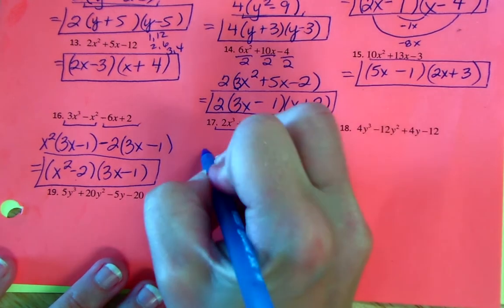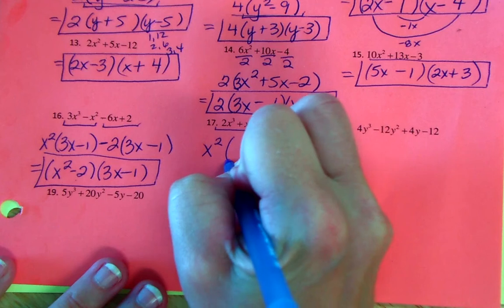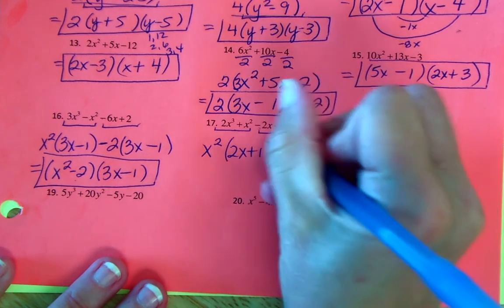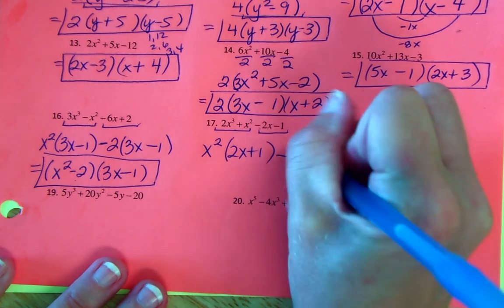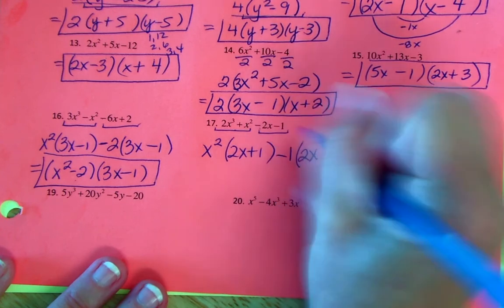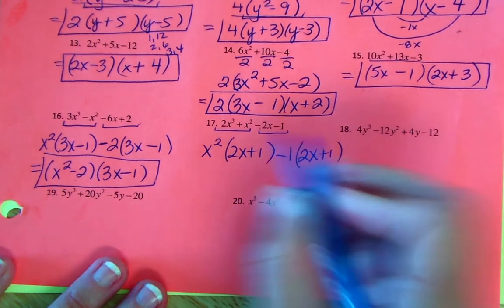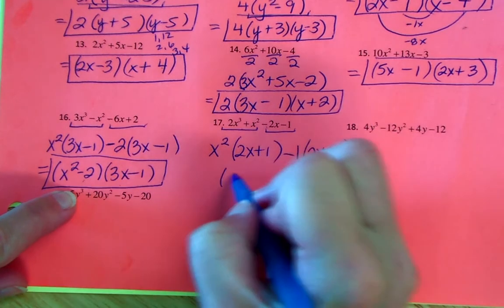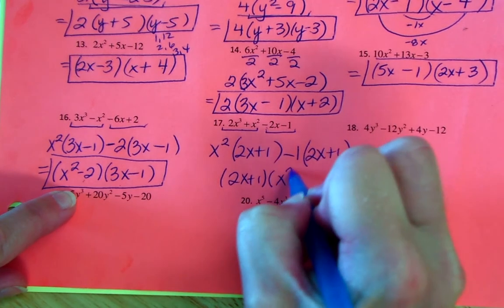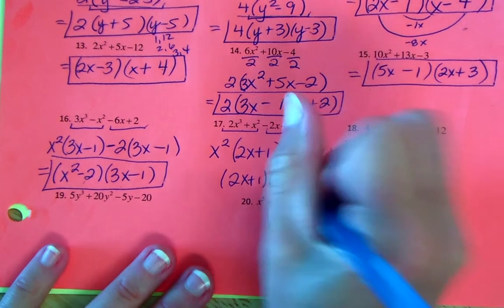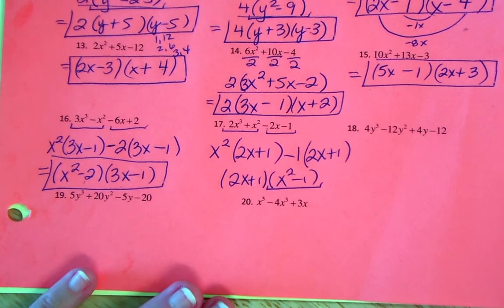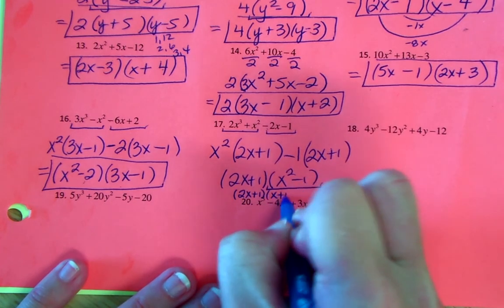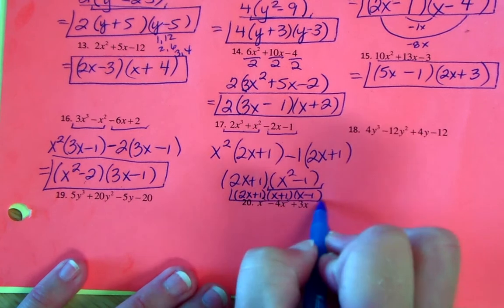Group, group — x² again, so the GCF is (2x + 1). Then minus, and there's no GCF, so we put 1 in and divide by negative 1: positive 2x and plus 1. The monomials can go first or the common binomial can go first. I'll put (2x + 1) first and then (x² − 1). This is DOTS, so it factors further to (x + 1)(x − 1).